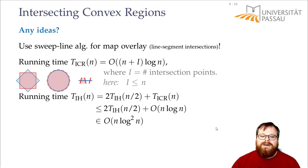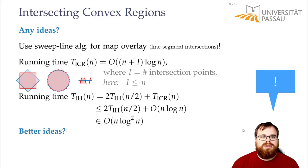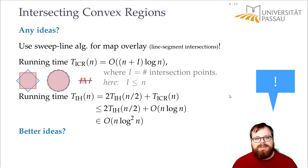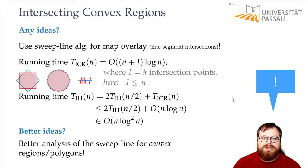O(n log² n) — of course I don't like this. I always want O(n log n). Can we do better? This is a very special case: we don't have arbitrary segments on the plane, but two convex polygons. The sweep line analysis works for all segments, but in this special case maybe the sweep line algorithm is even faster.